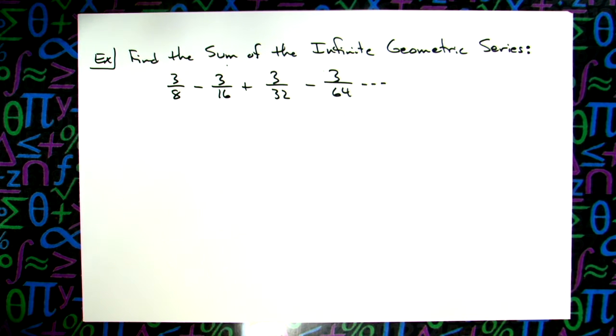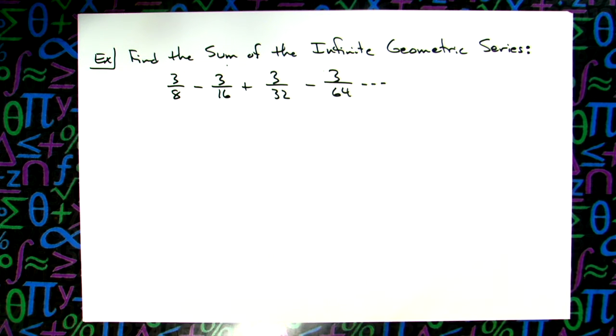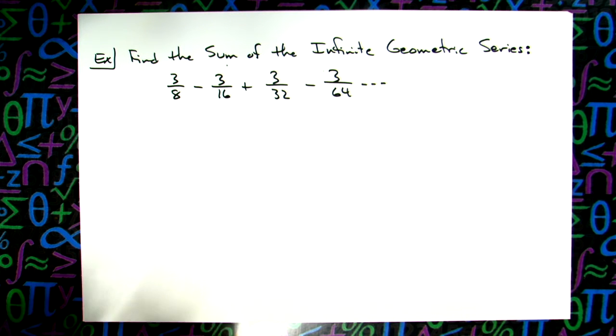First thing you're going to do is find r. You're going to want to find that common ratio, because if the absolute value of r is greater than 1, then there is no sum, so we just have to write there is no sum. If it turns out to be less than 1, then we can go ahead and calculate it.